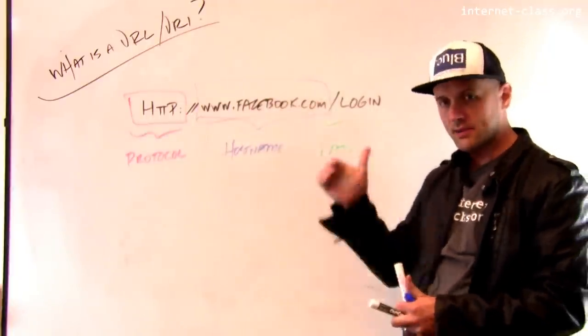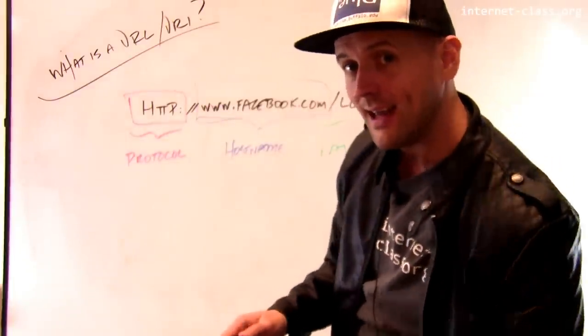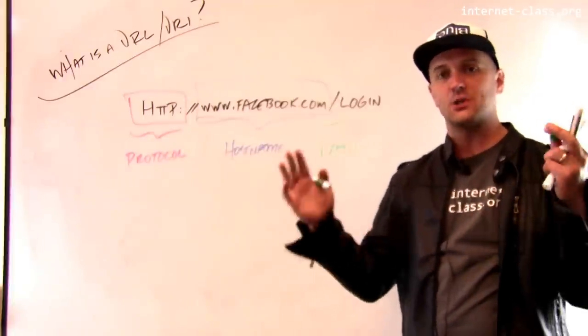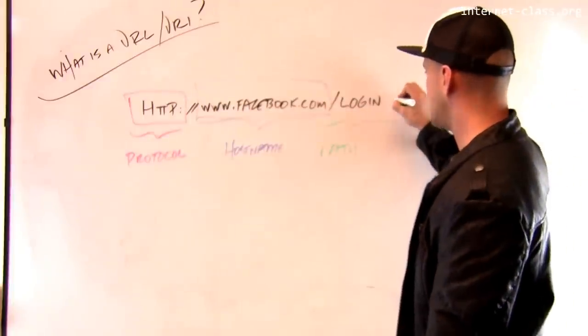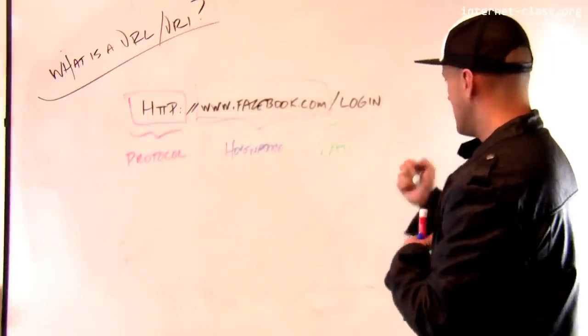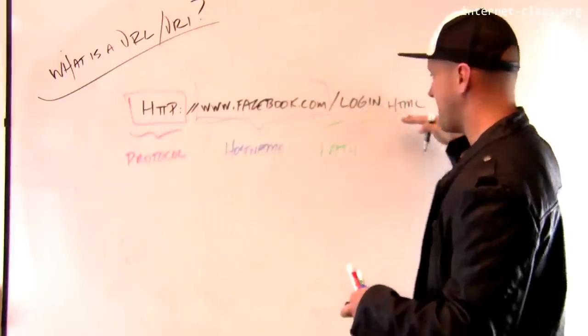The last part, kind of hanging out over here on the right, is what's called the path. And in the early web, the path actually was the path of an actual document. So there might have been a document. Let's imagine this is login, I don't know, login.html. And so this was actually a file name.